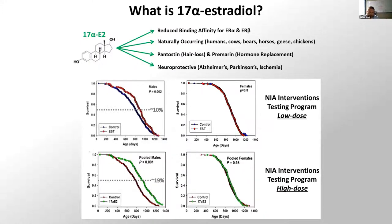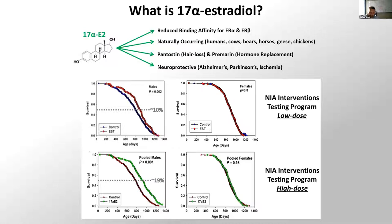More recently there's a belief that this estrogen provided exogenously may have a role in systemic aging. This first came about when the Interventions Testing Program in the U.S., as part of the NIA, determined that when you provide this estrogen at two different doses it extends median and maximal lifespan — but only in males. There's probably a story as to why females are not responsive, which we believe has to do with competition between endogenous beta-estradiol and exogenous alpha-estradiol.